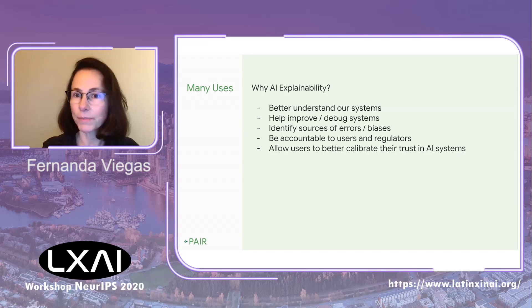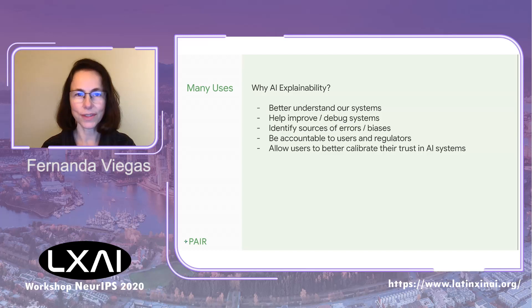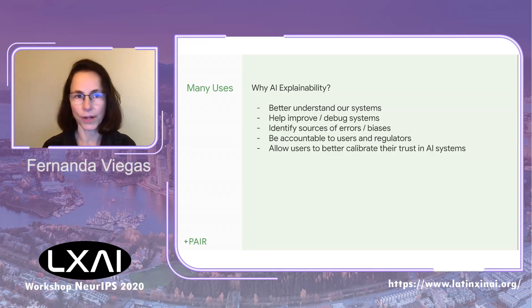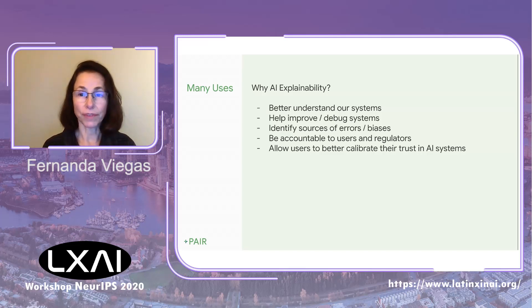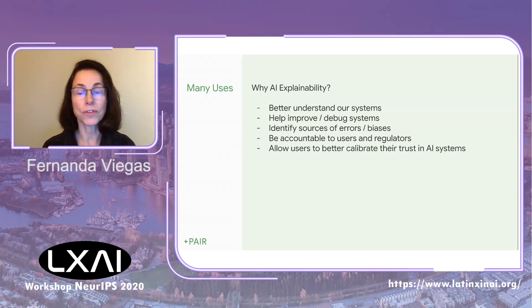Let's talk about AI explainability — why do we care about this? There are a number of reasons, sometimes also thought of as interpretability. I'll use these two terms interchangeably. Explainability helps us better understand the systems we're building. It helps us improve and debug these systems — we're able to identify sources of errors and biases. We can become more accountable to users and regulators, and it allows users to better calibrate the right level of trust they should have in AI systems.